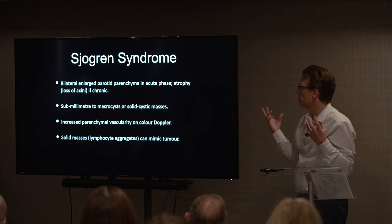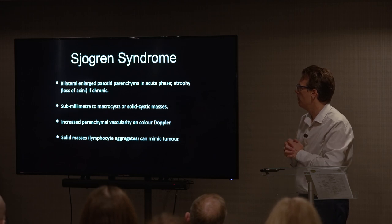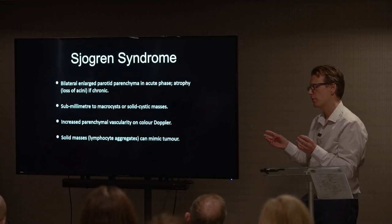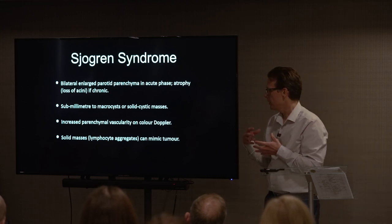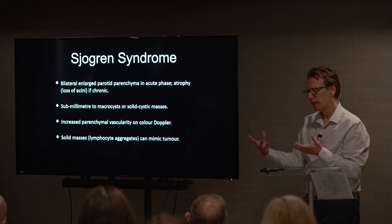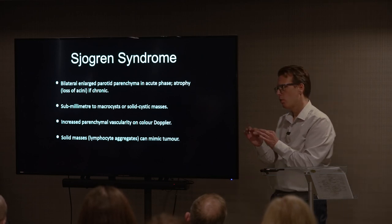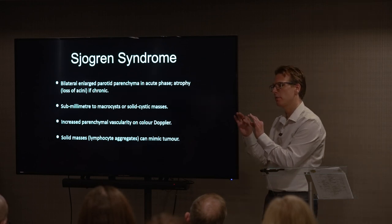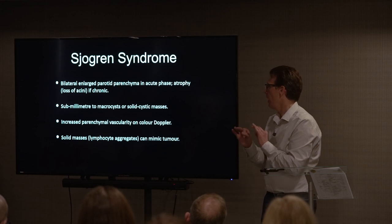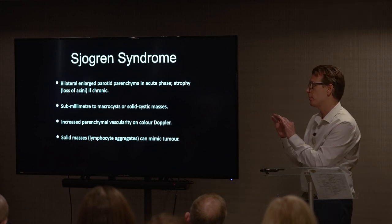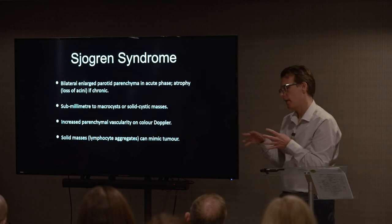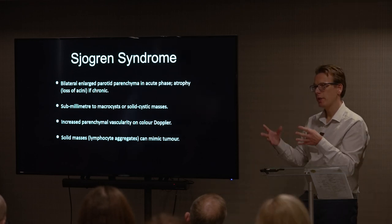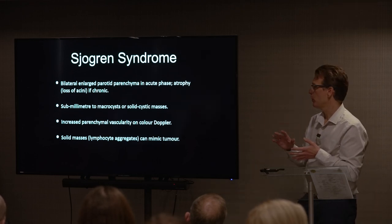Sjögren's syndrome tends to present in the acute phase as bilateral enlarged glands, and with time the gland parenchyma becomes atrophic and smaller. On ultrasound, you see a lot of rounded hypoechoic dark spots within the gland — that's the classic appearance. Some of these can have a solid component when they get bigger, and because it's an inflammatory process, you can get increased vascularity on color Doppler.